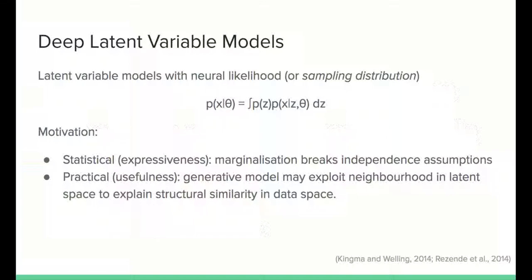Deep generative models, or deep latent variable models, are generative models with neural likelihood or neural sampling distribution. Since the publication of variational autoencoders in 2014, these models have gained popularity, because VAEs admit an efficient gradient-based training algorithm based on ideas from variational inference and stochastic computation graphs.